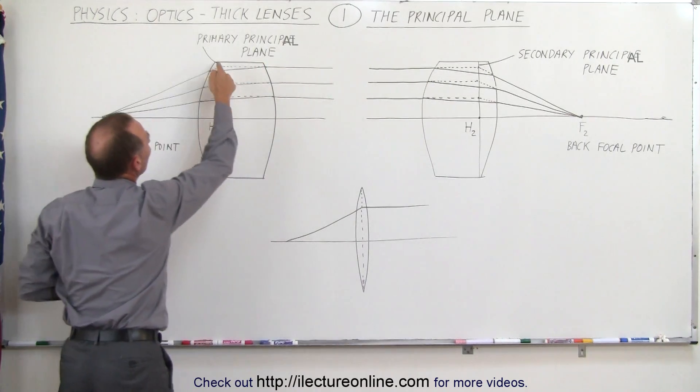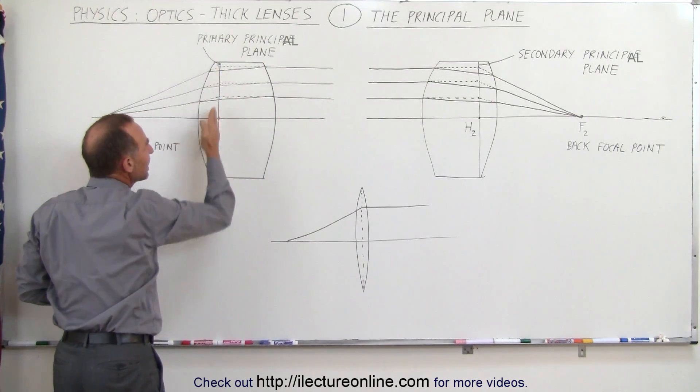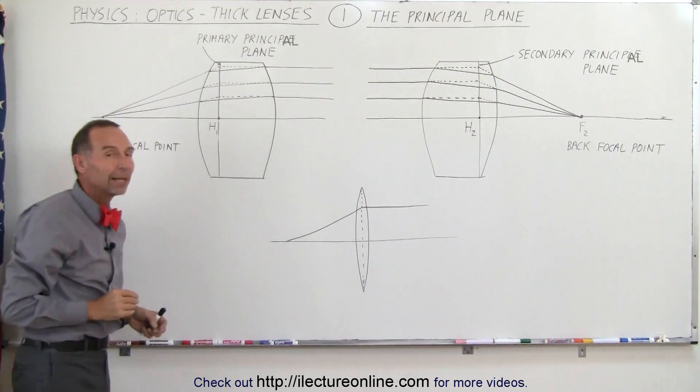We do the same for the third ray and where the points meet, they tend to be in a vertical line or vertical plane.